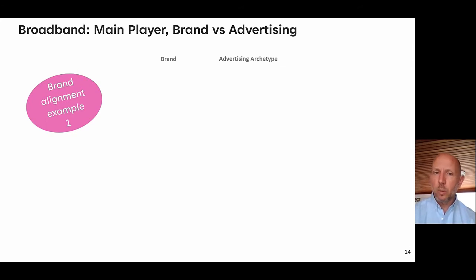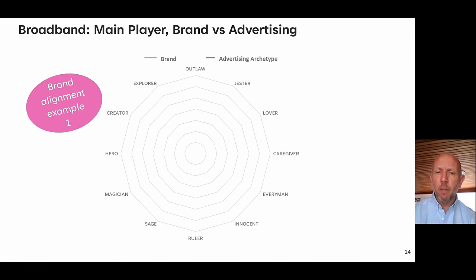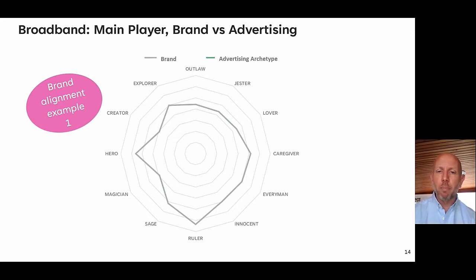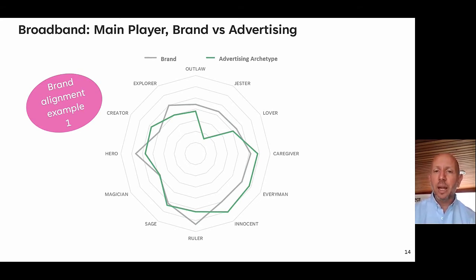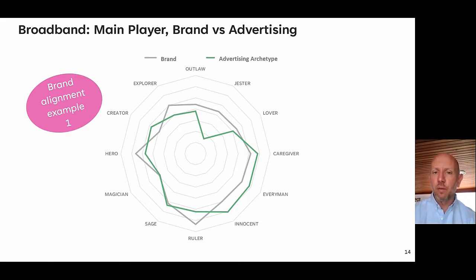Let me give you an example from a self-funded study we ran looking at brand positioning and alignment with advertising in the broadband category. Here's our first brand — a long-established brand within the category. You can tell it's long-established because it spikes on ruler: it's all about authority and upholding the status quo. When we then showed respondents an advert for that brand, you can see that broadly speaking it had a pretty good fit — a good brand alignment for positioning of brand and positioning of advertising.